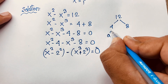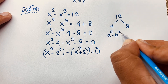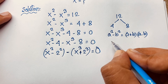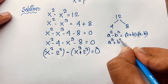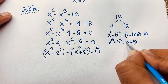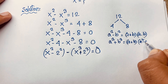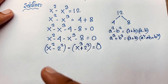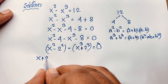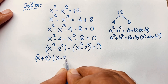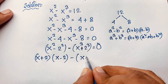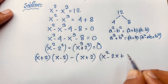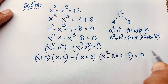So we apply: a squared minus b squared equals (a plus b)(a minus b), and a cubed plus b cubed equals (a plus b)(a squared minus ab plus b squared). Applying these formulas here we find x plus 2 times x minus 2, then a plus b times a squared minus 2x plus b squared, where 2 squared equals 4, all equal to 0.